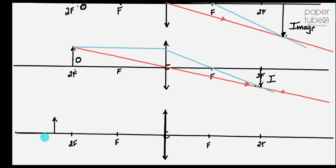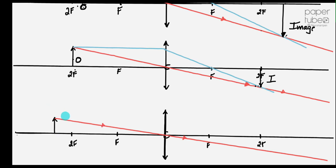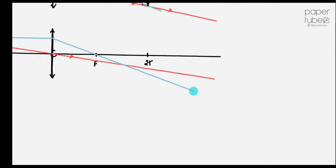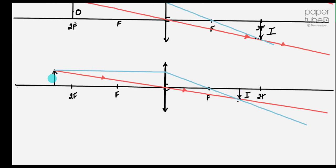Now I'm going to draw the red one coming in — a ray through the center is undeviated. Now I'm going to do the blue one — a ray parallel to the principal axis is refracted or bent through the focal point. See where the red and the blue cross — that's your image. It's a real image. The image is smaller than the object, it's upside down, it's inverted. The image is inverted, smaller than the object, and real. So that's the camera.